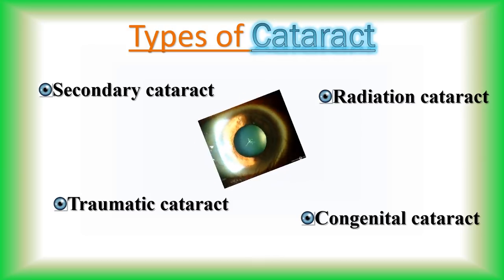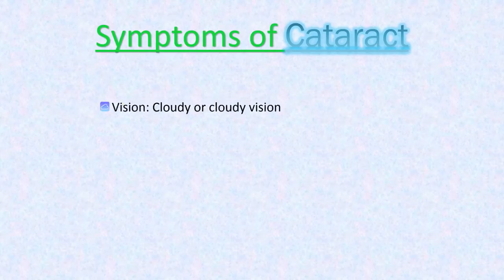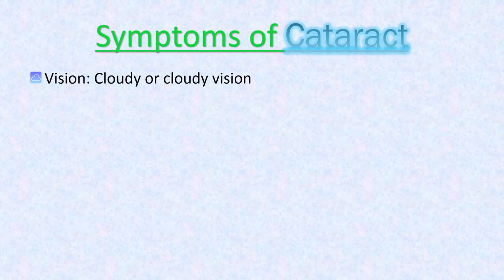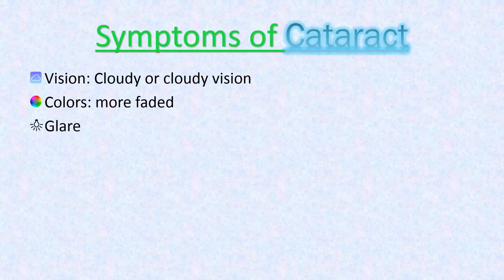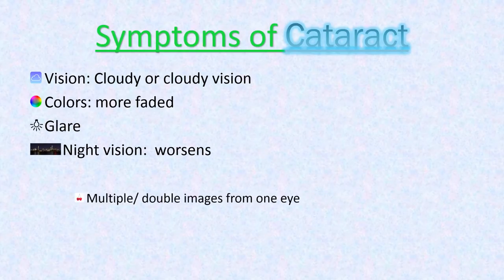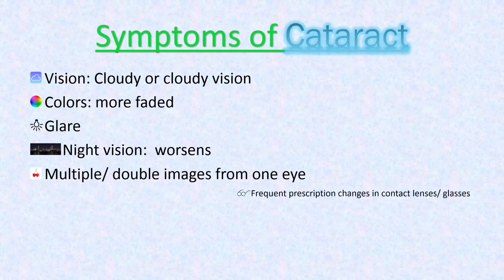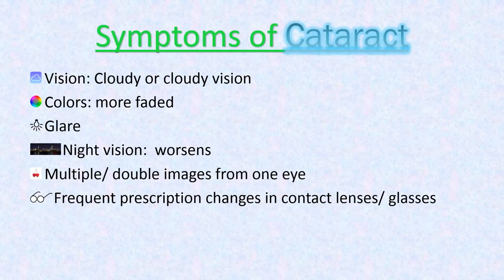The most common symptoms of a cataract are: blurry or cloudy vision; colors that appear more faded; headlights, lamps, or sunlight may appear too bright; a halo may appear around lights; night vision worsens; and multiple images or double vision from one eye — this symptom may disappear as the cataract gets larger.